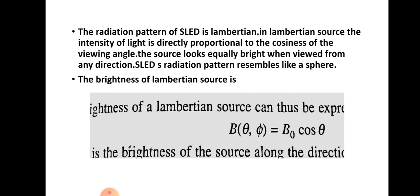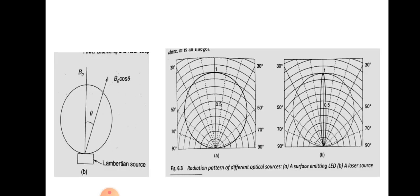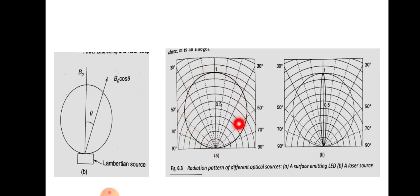Here we are representing the radiance pattern using the spherical coordinate system, where R, θ, and φ are the coordinates. So the expression for radiance is B(θ, φ) = B₀ cos θ. If we are using a Lambertian source, the pattern looks like this: B₀ is the maximum radiance, and B₀ cos θ makes an angle θ with B₀. Here is the radiation pattern of different optical sources — first is the LED, which has a Lambertian pattern.